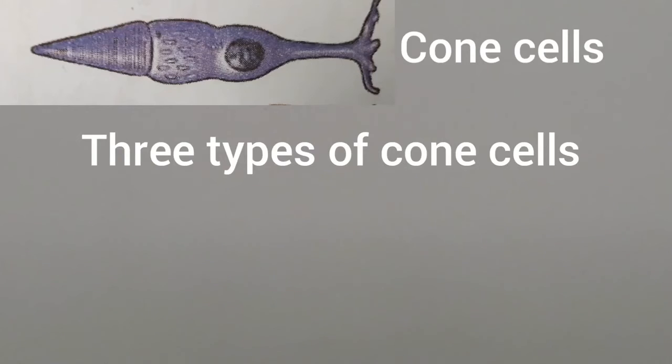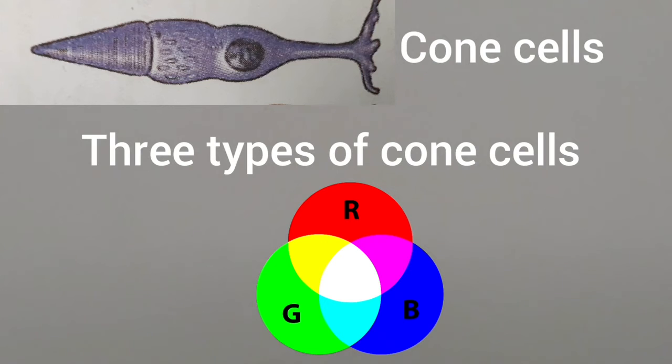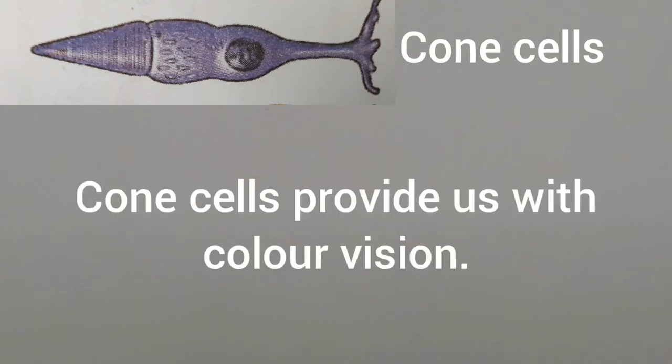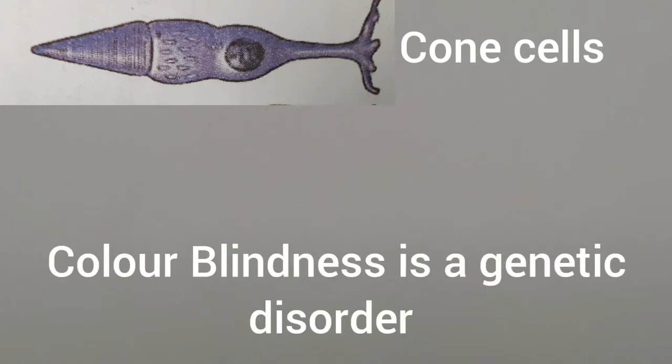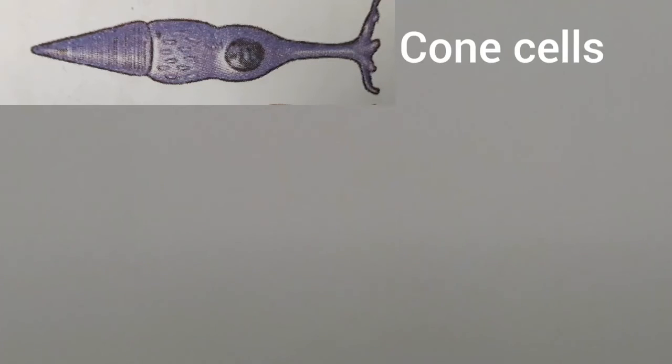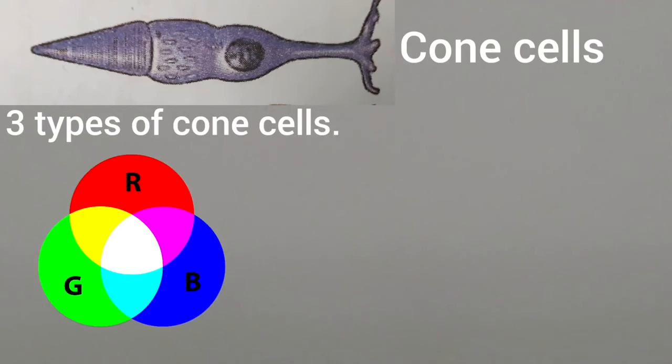Overall there are three types of cone cells in our eyes which helps to detect the primary colors of light: red, green, and blue. Cone cells provide us with color vision. Color blindness is a genetic disorder.